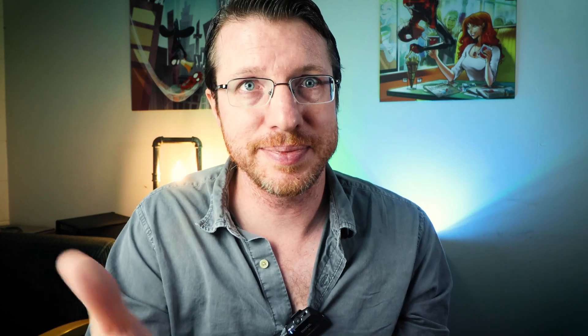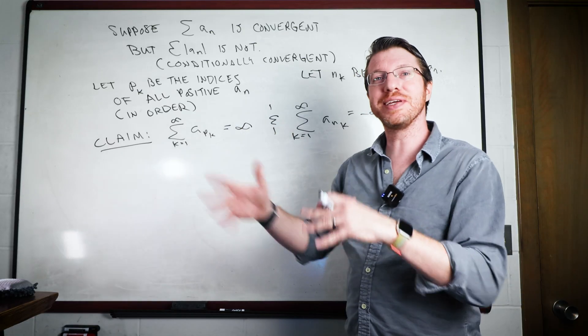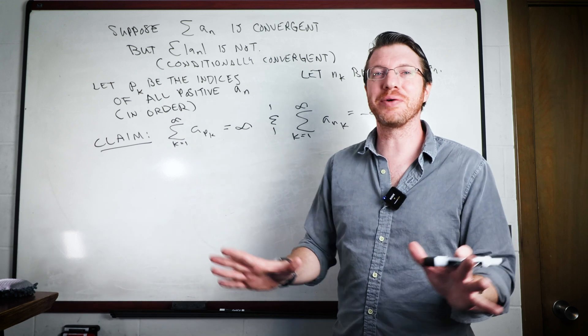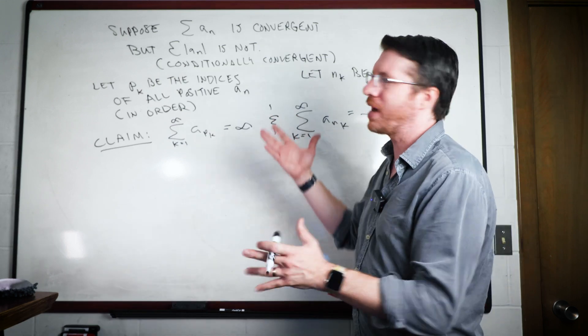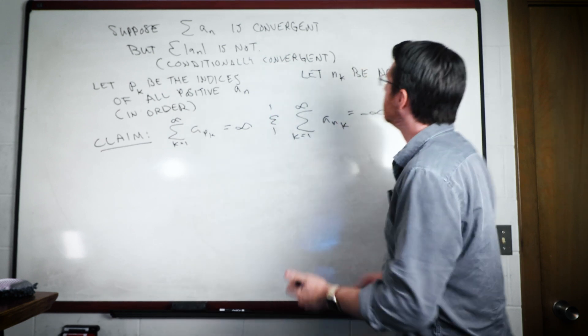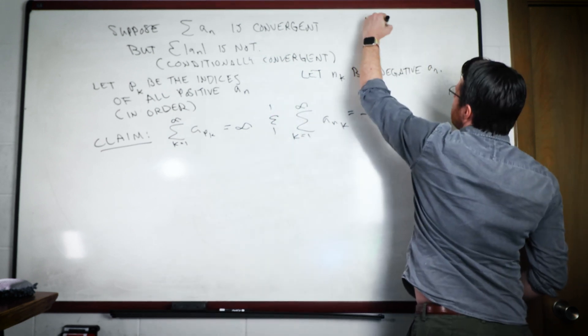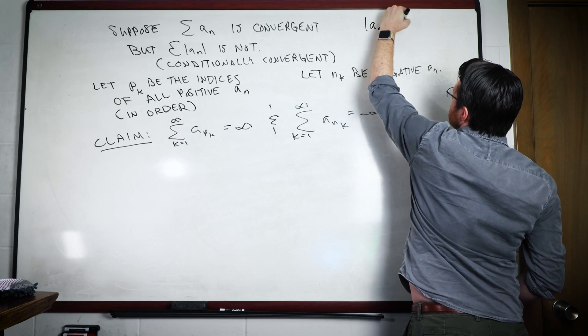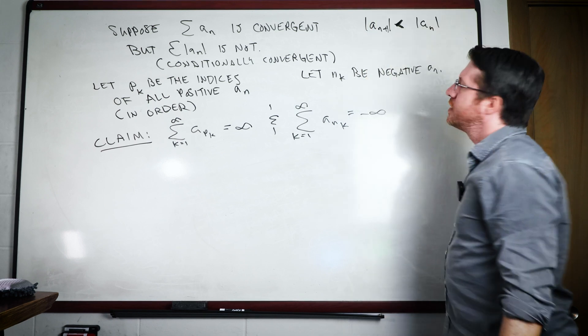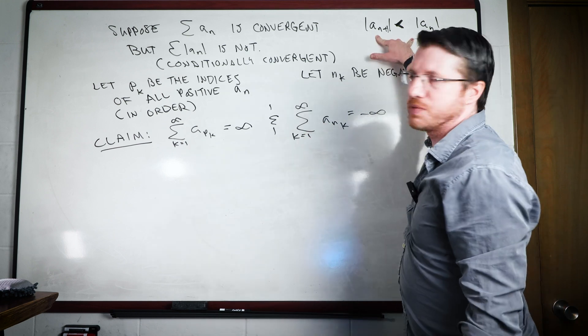The first thing we need to do is I need to show you that if we take all the positive terms, then the sum of those positive terms is going to be positive infinity. And if I take all the negative terms, the sum of all those negative terms is negative infinity. And this is going to hold true for every conditionally convergent series.